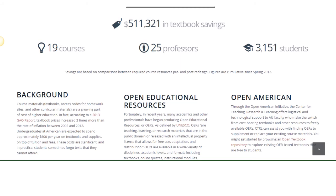They put student cost savings front and center, and they use data that emphasizes the reach of their program's impact. The audience could be administrators, students, anyone who's concerned about higher education costs. The values communicated here have to do with the impacts of affordability, and not as much about the benefits of open, like flexibility and the affordances of open pedagogy. But this is the focus that this institution decided was most important.